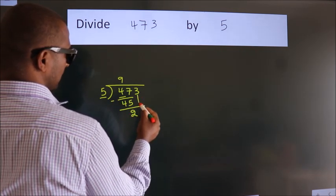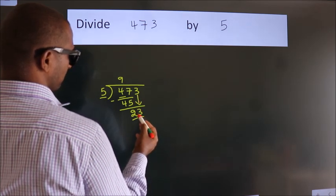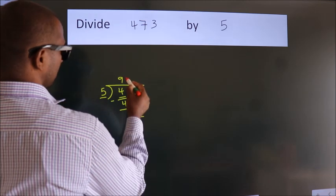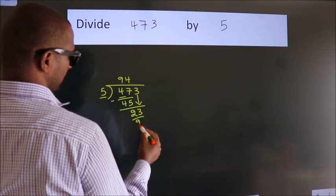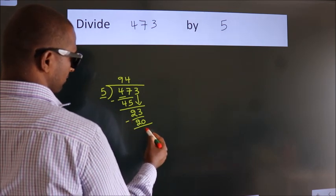After this, bring down the beside number, so 3 down, so 23. A number close to 23 in 5 table is 5 fours, 20. Now we subtract, we get 3.